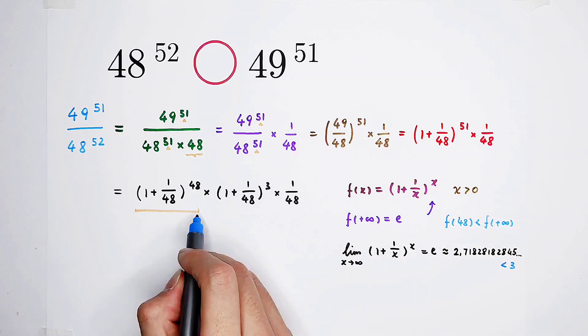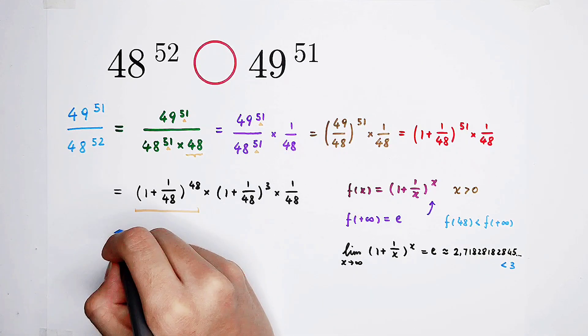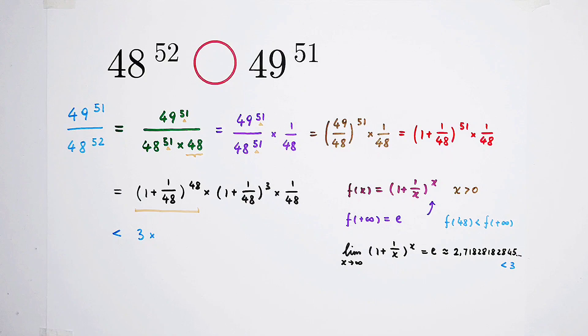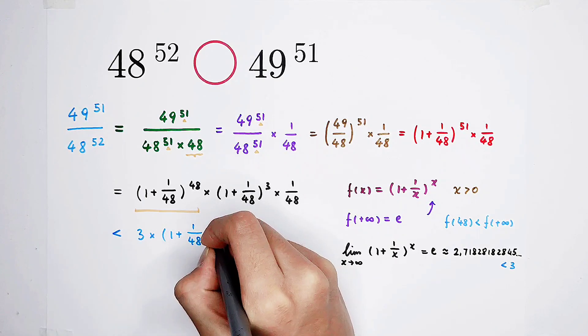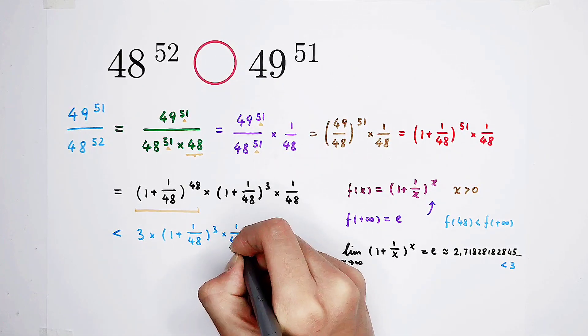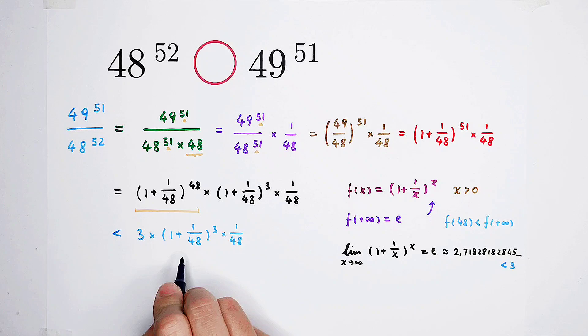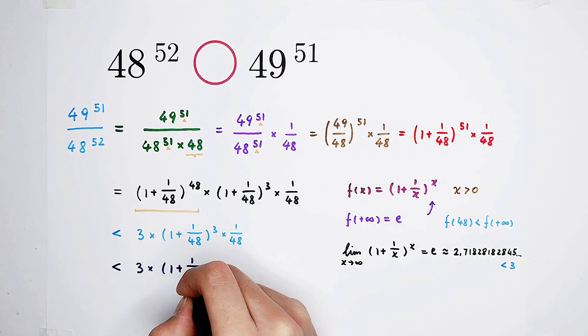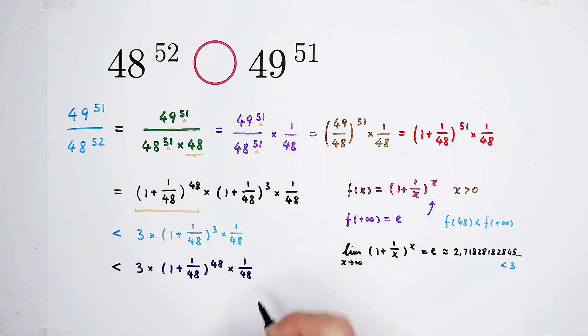Because f of positive infinity is e, and e is smaller than 3, so f of 48 is also smaller than 3. So that means, this fraction, 1 plus 1 over 48 to the power 48, is smaller than 3. Smaller than 3 times this one. This one... What can I do about it? Right here. And I have an idea. Look. Because 1 plus 1 over 48, it is greater than 1.